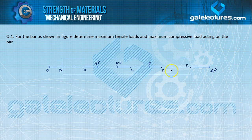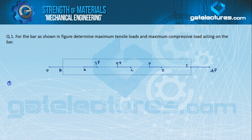But portions of the bar — AB, BC, CD, and DE — are each under pure axial loading. So first of all, we will use the section method. By the section method, we will find out how much load is acting on which portion of this bar.